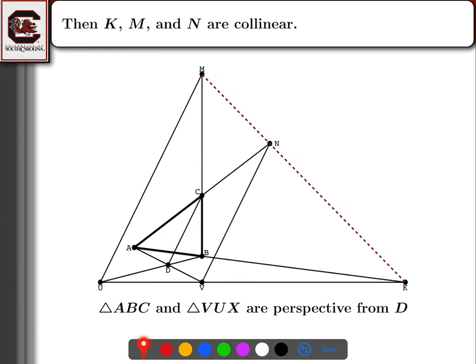Let's check: AB goes through K, and the line through V and U also goes through K. BC and UX go through M — that's correct. And AC and VX go through N — VX goes through N as well. So extending the corresponding sides of these two triangles gives us the points M, N, and K. That's going to give us that those three points are collinear by Desargues' theorem if the two triangles are perspective from a point.